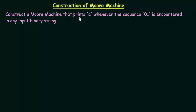Our task is to construct a Moore machine that prints A whenever the sequence 01 is encountered in any input binary string. We have done this same example for Mealy machine as well, so let's see how we can design the Moore machine for this task.